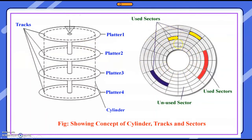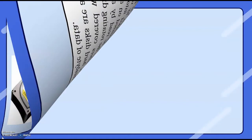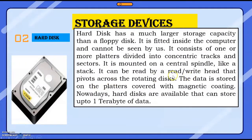There is the first track, then second track, third track, fourth track — and this way it is divided into so many tracks. Each track is again subdivided into sectors. The yellow portion you can see — this is one sector, this is another sector. Data is stored in these sectors. This is the inside portion of the hard disk, and now this point should be more clear to you.